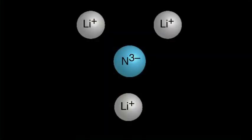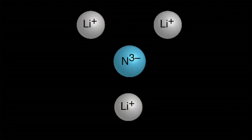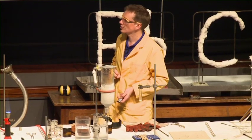The lithium loses its electron in every reaction, forming lithium plus. The nitrogen captures the electrons. So we have one nitrogen with three lithiums around it. This is lithium nitride.